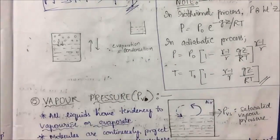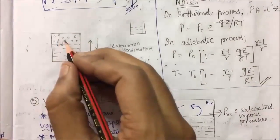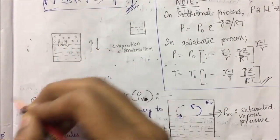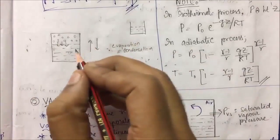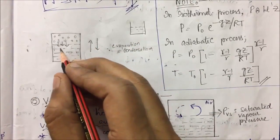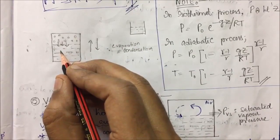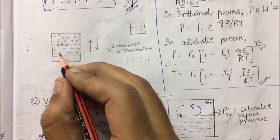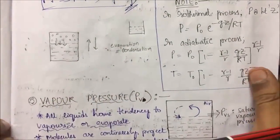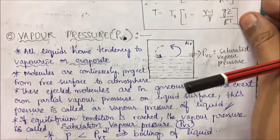This state is called equilibrium. The partial pressure exerted by the gaseous molecules at the equilibrium condition is called saturated vapor pressure. It's a very simple concept.